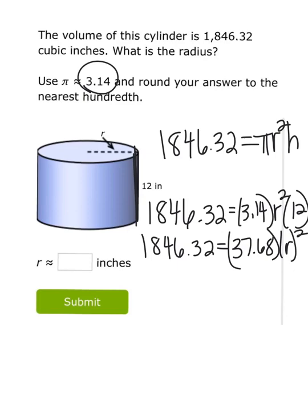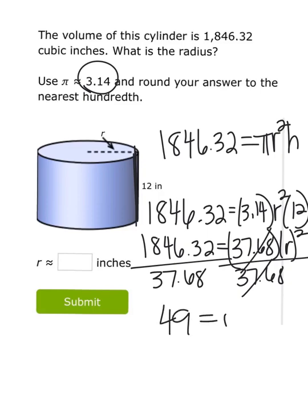In order to get radius by itself, I would divide each side by 37.68. When I divide 1,846.32 divided by 37.68, I get 49, and that would equal radius squared.